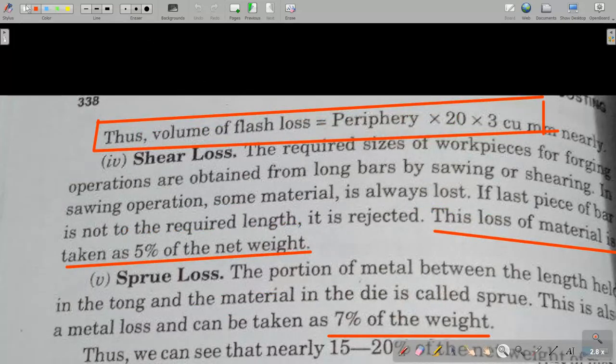This is the equation, that the total volume of the flash is periphery multiply by 20 multiplied by 3 mm cube. Next is shear losses. What is shear loss?